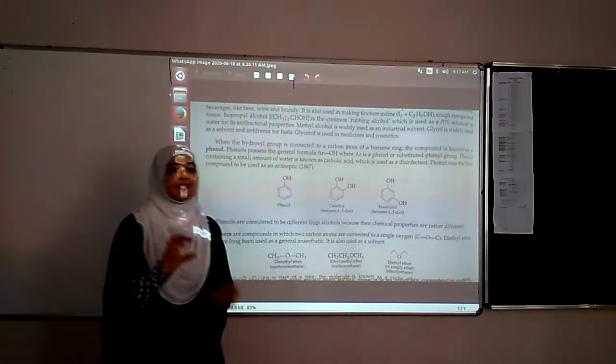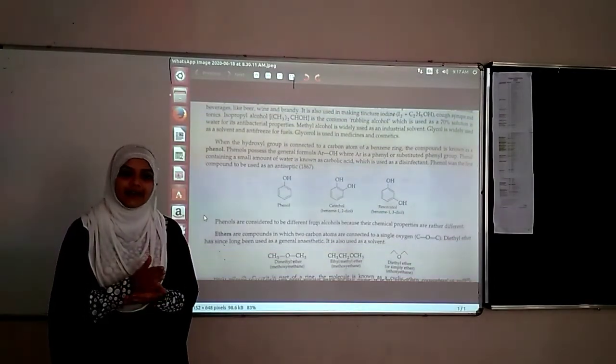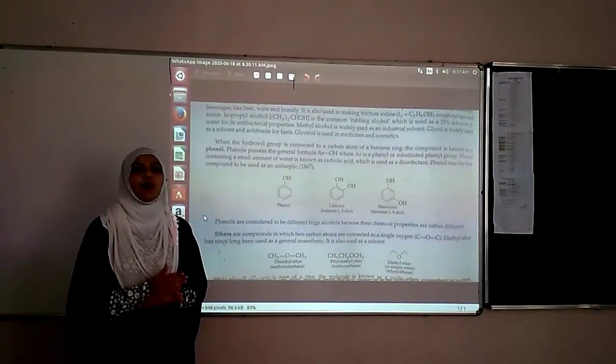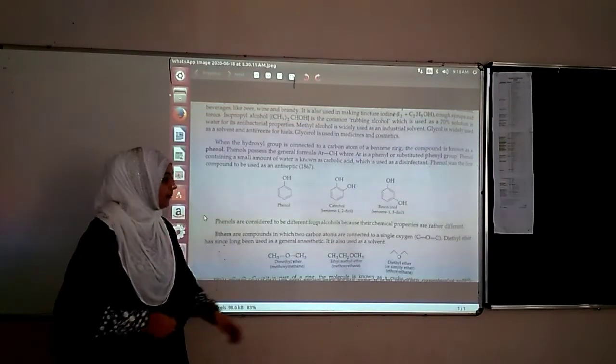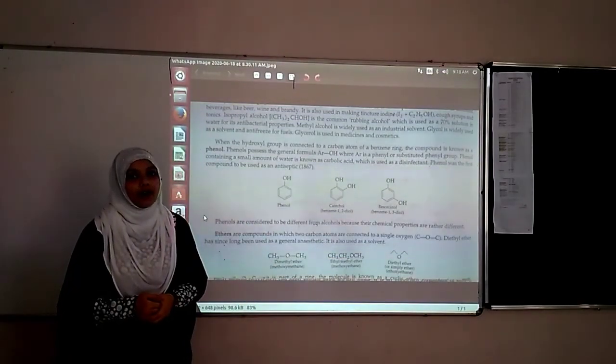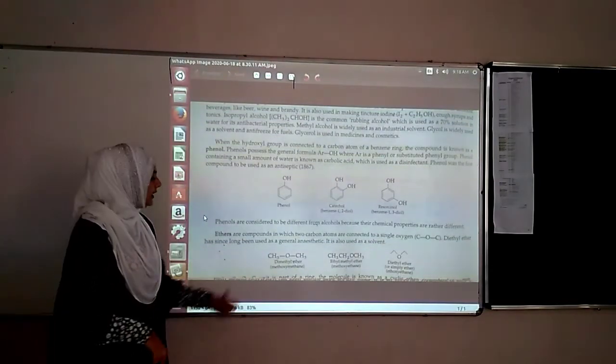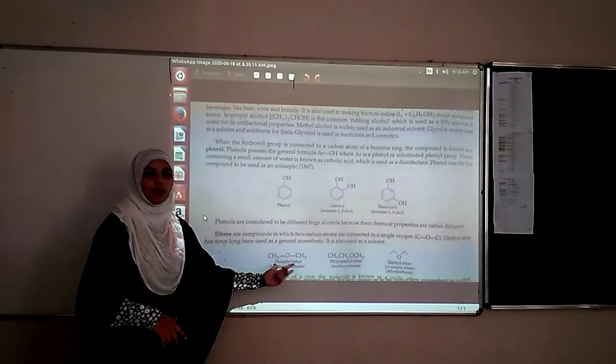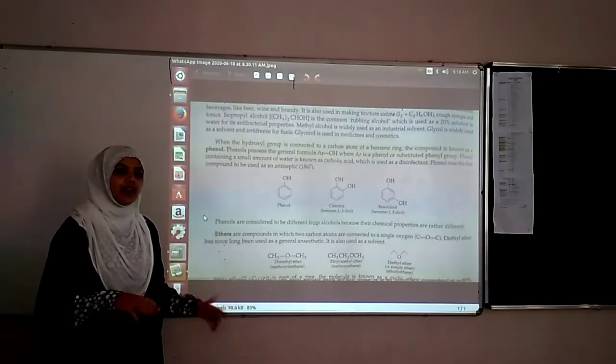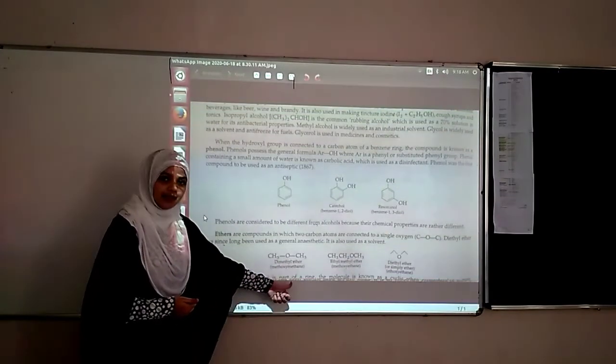Oxygen with alkyl carbon chains is called alkoxy, like methoxy, ethoxy, propoxy - like that we have to call. And we can call the parent compound like ethane, methane, propane, butane. Both of them are the same carbons: CH3, CH3. You can take any one with the oxygen. That is why the name is methoxyethane.